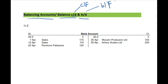Not the boyfriend! Okay, bank account. Now generally a bank account is a debit account. We assume the business has money in the bank, but it can be overdrawn as well. Let's see what happens in this particular one.